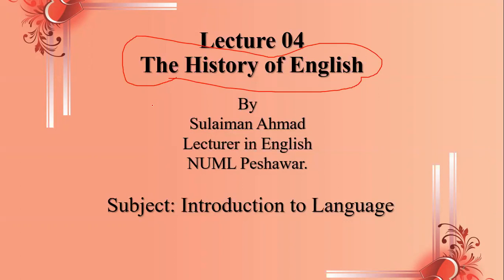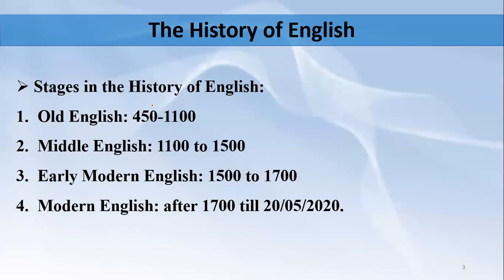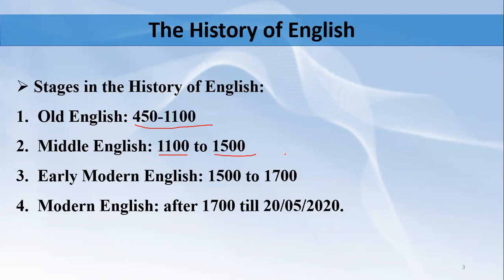Today let's talk about the history of the English language. The history of English can be divided into three main parts. The first part is called the Old English period, which is from 450 to 1100. Then Middle English, from 1100 to 1500. The third stage is Modern English, from 1500 till today.